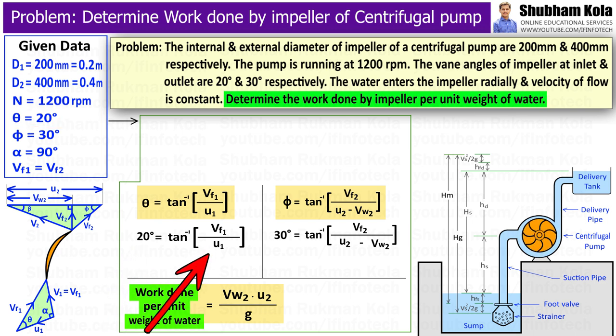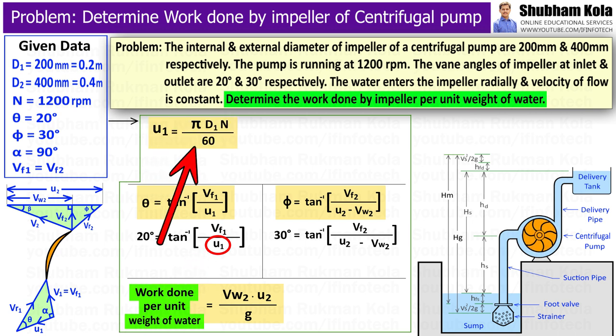And in this equation, we need to find out U1, that is blade velocity at inlet, which can be calculated from the formula we discussed in previous video.